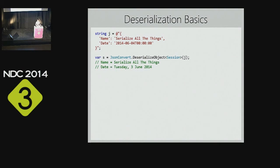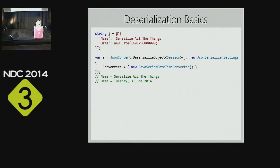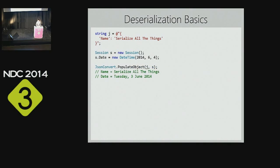Deserializing works with the equivalent method DeserializeObject — you provide the JSON instead of an object, but you must specify the target type since JSON contains no type information. There's also an overload that takes settings. A lesser-known helper is PopulateObject: while DeserializeObject creates a new object, PopulateObject takes an existing object and populates values from JSON onto it, leaving already-set properties unchanged. Useful, though not something you'd use every day.